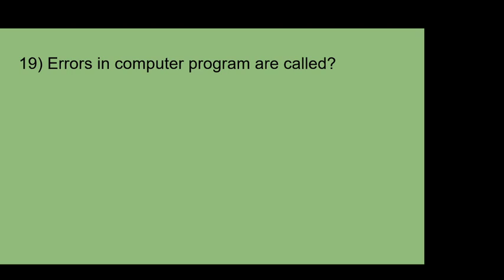Errors in a computer program are called: A: Bugs. B: Spam. C: Police. D: Mistakes. The answer is bugs.